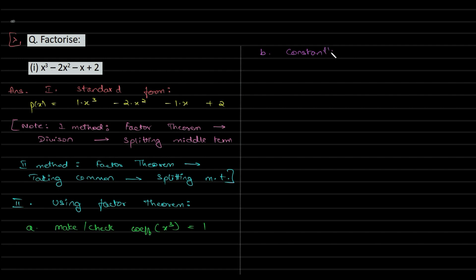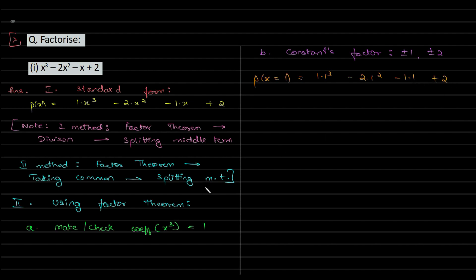For the Factor Theorem, write the factors of the constant term 2: ±1, ±2. These are the integer values that divide 2 with remainder 0. Now pick one value you think will make the entire expression p(x) equal to 0. Trying x = 1: 1(1)³ - 2(1)² - 1(1) + 2 = 1 - 2 - 1 + 2 = 0. So x = 1 makes the expression equal to 0.